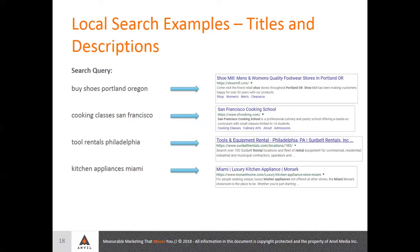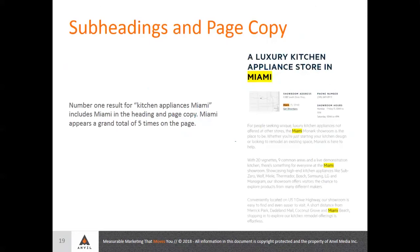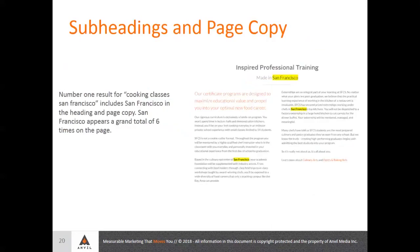Moving on-site, using 'Kitchen Appliances Miami' as an example, we can see that Miami appears in their top heading and then four other times throughout their body copy. And then using 'Cooking Classes San Francisco,' we can see San Francisco appears three times in the screenshot — but because I couldn't get all the page content, it actually appears six times on the page. So bottom line: including those local modifiers in your titles, descriptions, headings, and page copy is very important.